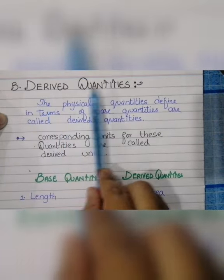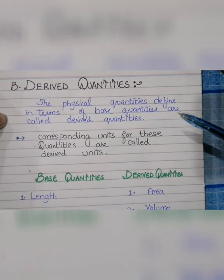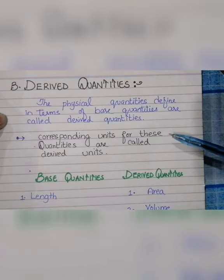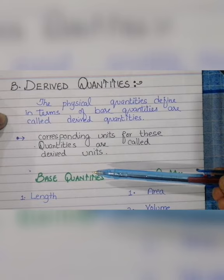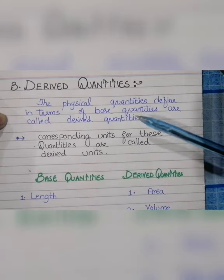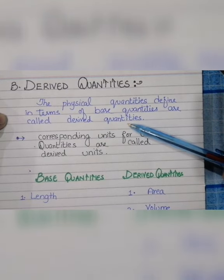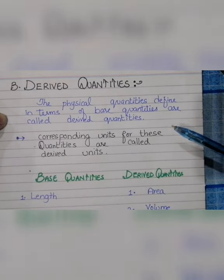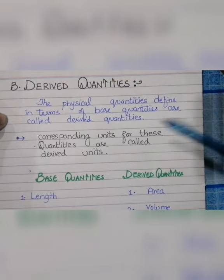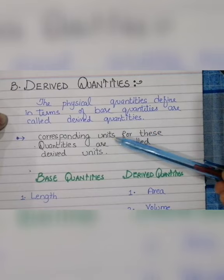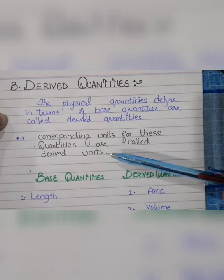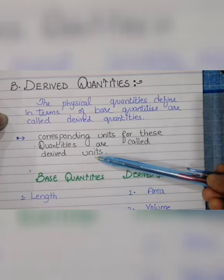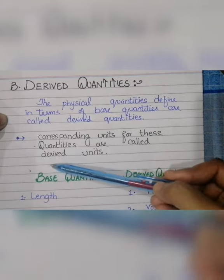The second category is derived quantities. The physical quantities defined in terms of base quantities are called derived quantities. These are quantities derived from the 7 base quantities by multiplying or dividing them to produce a new quantity. That is why we call them derived quantities. The corresponding units for these quantities are called derived units, derived from the base units.